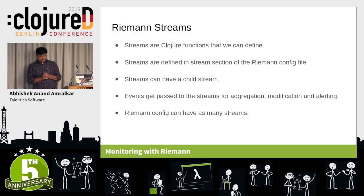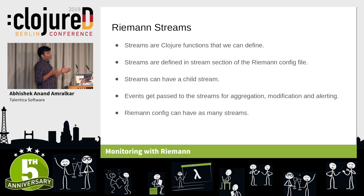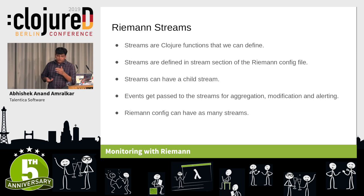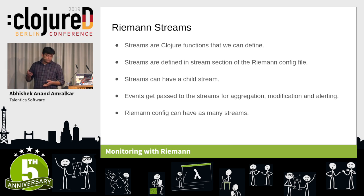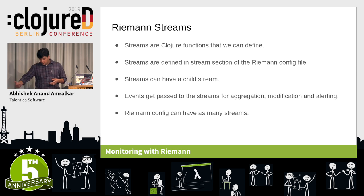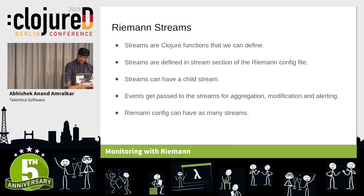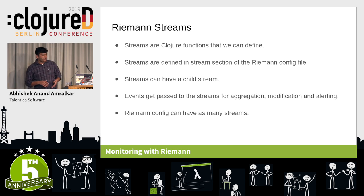When we talk about streams, streams are the logic in Riemann — your Clojure functions that you can write. You can write any number of streams in your Riemann monitoring. Streams can have child streams. Events pass through streams for aggregation, modification, and alerting.